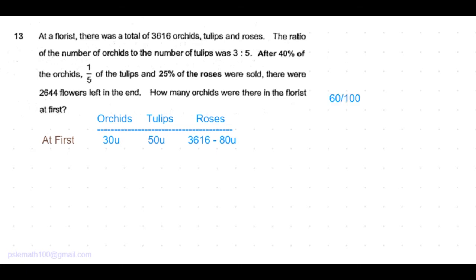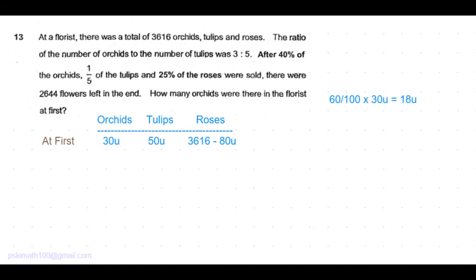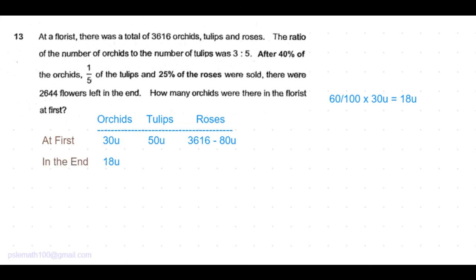After 40% of the orchids were sold, which means 60% is left. 60% is 60 over 100 of the number of orchids that is 30 units equals 18 units. So in the end, 18 units of orchids are left.